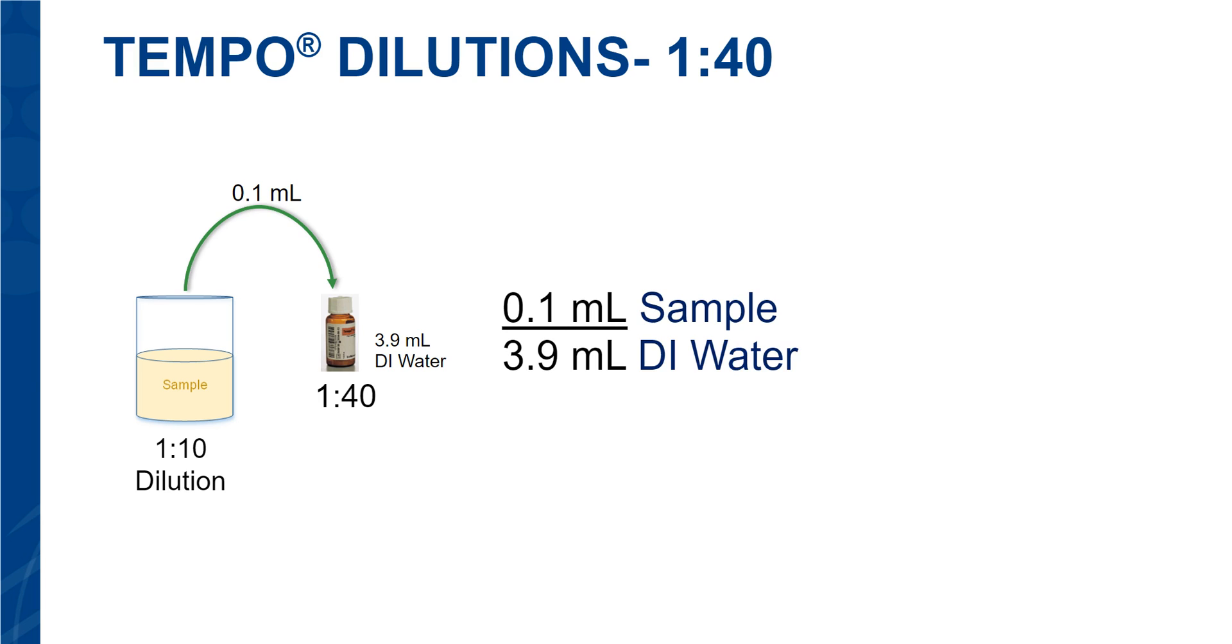So, the dilution of the tempo vial is now 1 to 10 over 4, or 1 over 40. We start with the same 1 to 10 sample, and so we multiply 1 to 40 times 1 to 10, giving us 1 to 400 dilution to enter into the tempo prep. That will allow us to have a counting range of 100 CFUs to 490,000 CFUs.